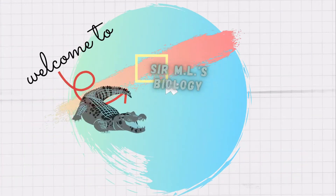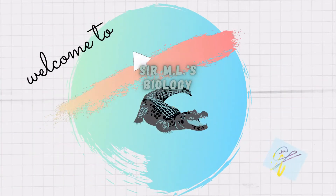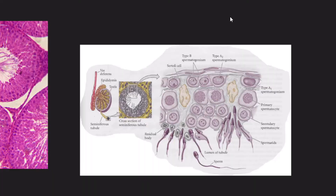Welcome to Sir MLS Biology channel. In today's video we will be talking about the process of spermatogenesis. Spermatogenesis is the formation of haploid male gametes or sex cells, referred to as spermatozoa, from diploid primordial germ cells.